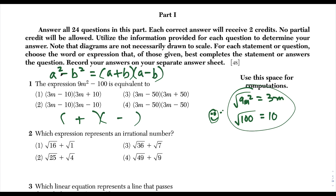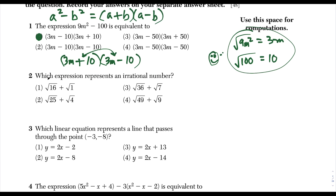The square root of the first term, 9m squared, was 3m, so that goes first in both parentheses. Then we write the square root of the second term — the square root of 100 was 10 — after the plus or minus. We scan the answer choices and this matches choice one. Remember multiplication is commutative, so we could just flip these. Choice one is definitely our answer.